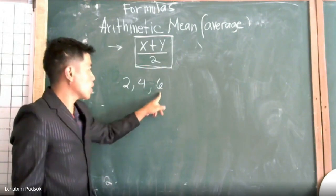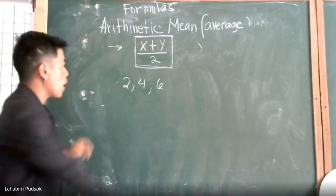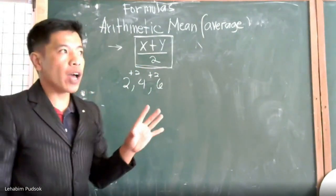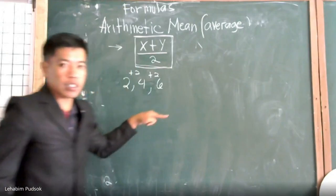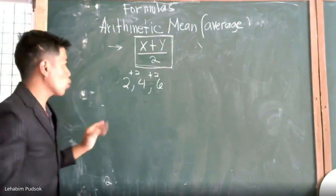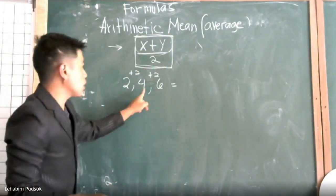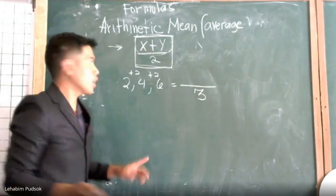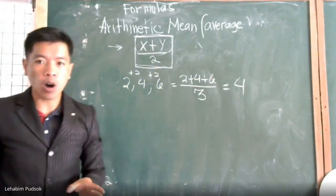We have 2, 4, 6. Can we say that this is an arithmetic sequence? Yes, because the pattern is adding plus 2. If it is an arithmetic sequence, we are talking about the operation of adding or subtracting. So if the problem says to solve for the arithmetic mean, you just apply the formula: x plus y all over 2, meaning divide by 3 and add the terms 2 plus 4 plus 6. That is how we solve for arithmetic mean.